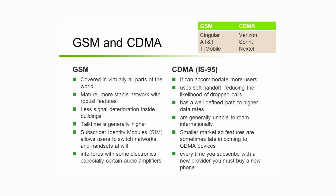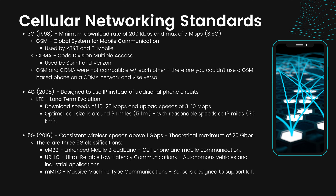Let's quickly compare and contrast GSM and CDMA. One notable thing about GSM is that it can interfere with some electronics, especially certain audio amplifiers. With CDMA, every time you want to subscribe to a new provider you must buy a new phone. The big difference is that CDMA networks use unique identifiers programmed into each device, while GSM networks use SIM cards to authenticate devices, allowing roaming and letting users use their device in different countries without changing their phone number. 4G, introduced in 2008, was designed to use IP instead of traditional phone circuits and introduced LTE with download speeds of 10 to 20 megabits per second and upload speeds of 3 to 10 megabits per second.